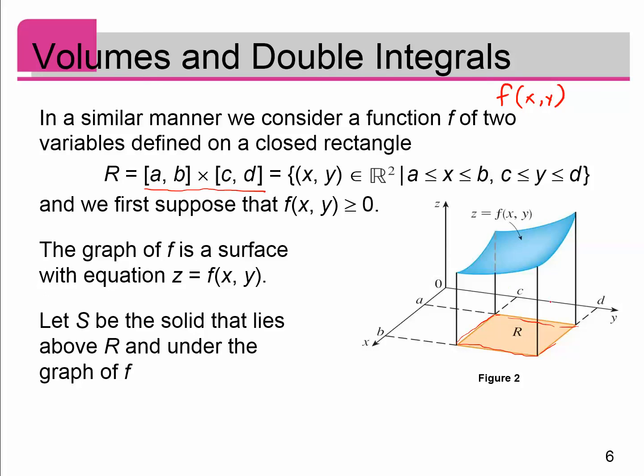And so this notation that I have underlined here is the same as saying the set of all points (x, y) in R², such that the x value is between a and b, that is the x coordinate is between a and b, and the y coordinate is between c and d.